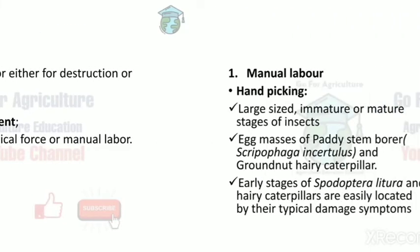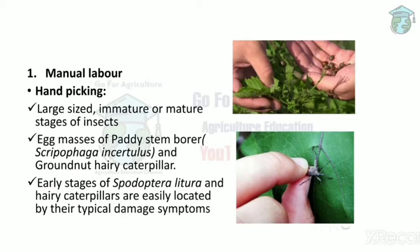The first main method in mechanical control is manual labor. In this, we can hand-pick large-sized immature or matured insects. For example, in the case of paddy stem borer (Scirpophaga incertulas) and groundnut hairy caterpillar, we can collect their egg masses by hand picking. Early stages of Spodoptera litura and hairy caterpillars can also be easily identified because of their damage symptoms.